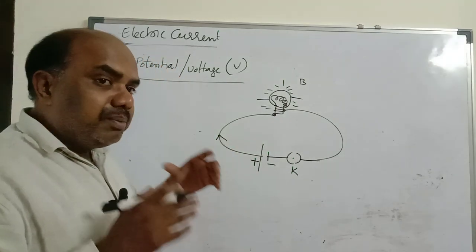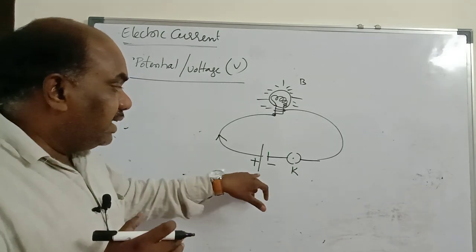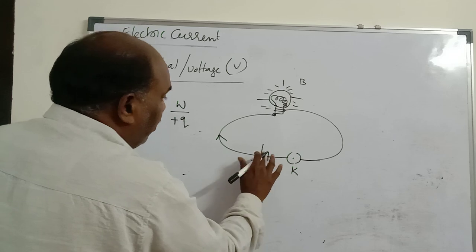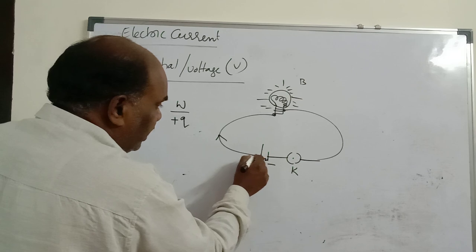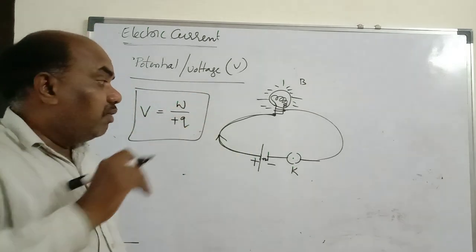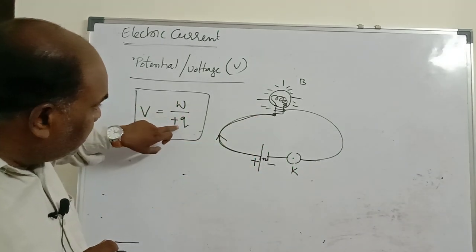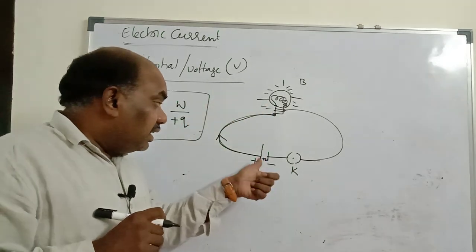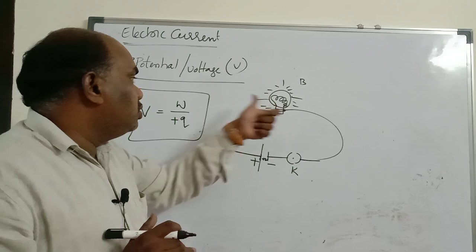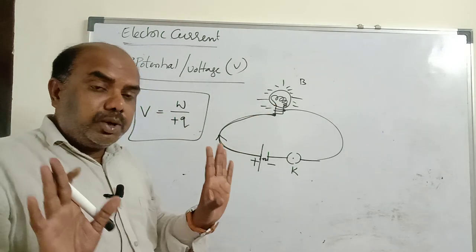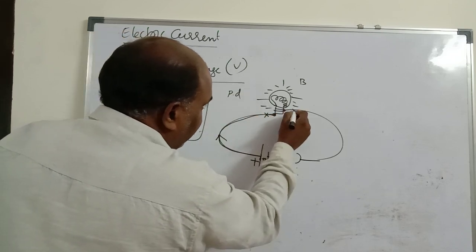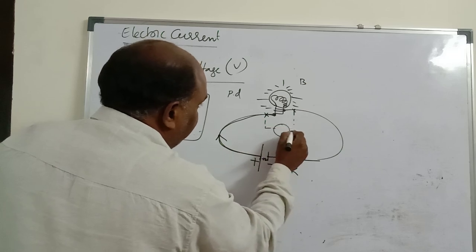The battery does chemical work to bring one unit positive charge from infinity to the consumer. This work done by the cell to bring one unit positive charge from infinity to the consumer is called potential. Important: you cannot measure potential directly. We can only measure potential difference — the difference between two terminal potentials. Potential difference is measured with a voltmeter.